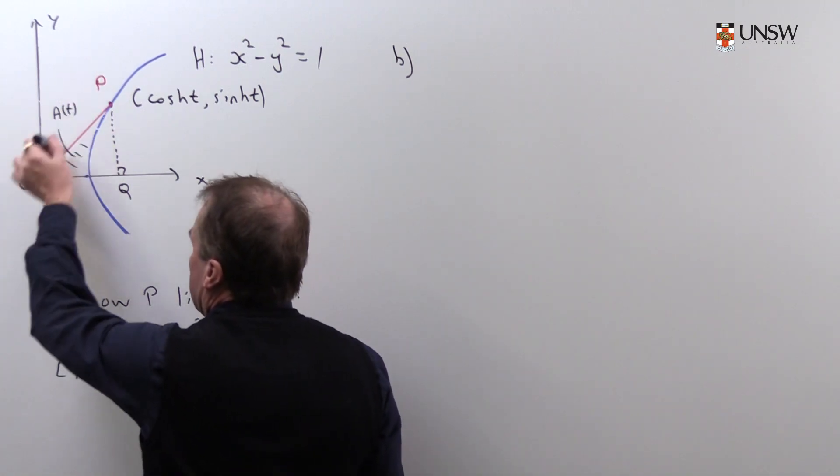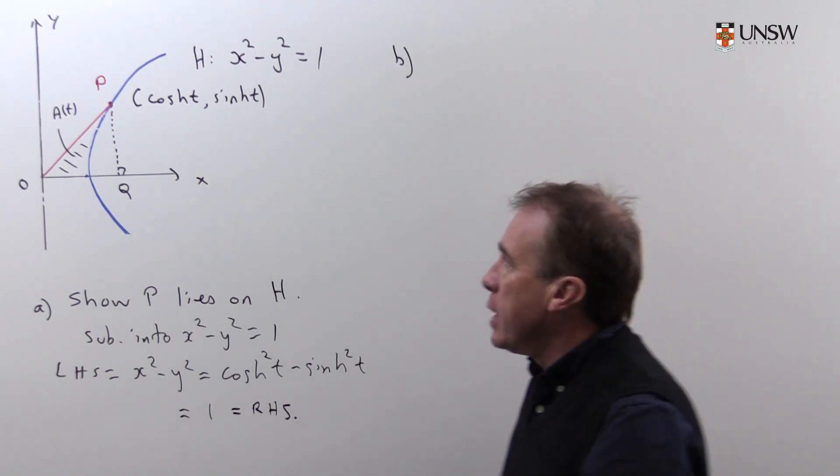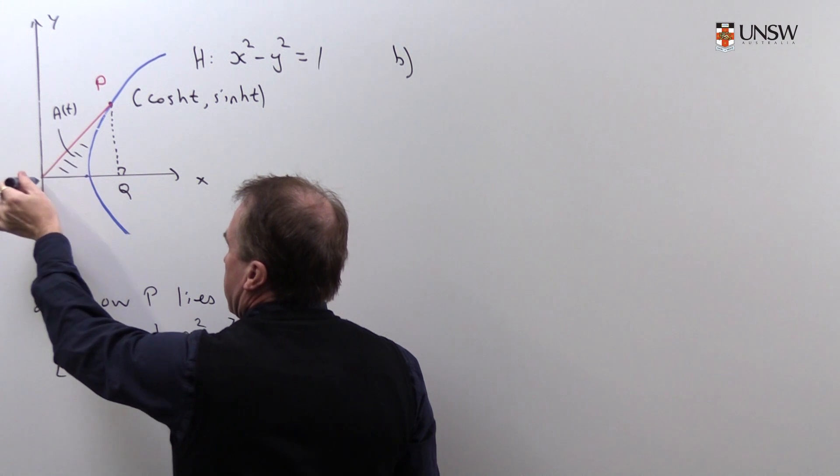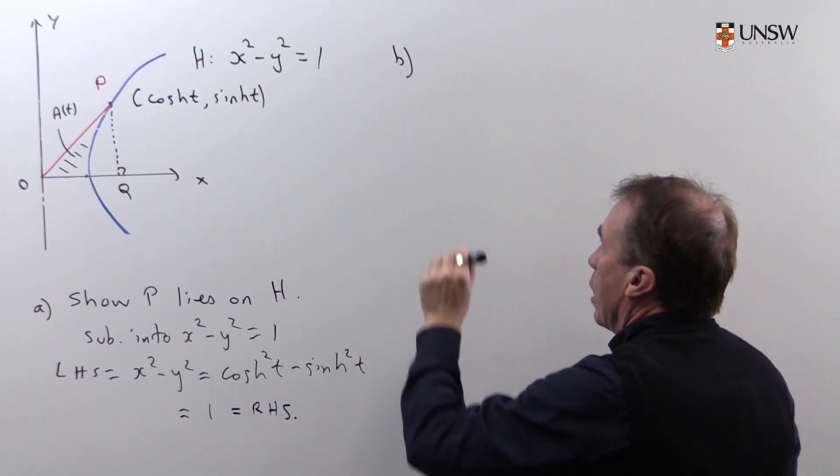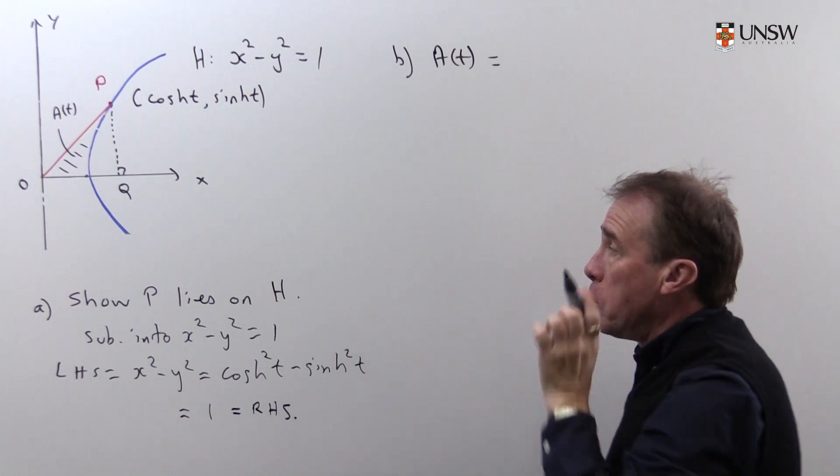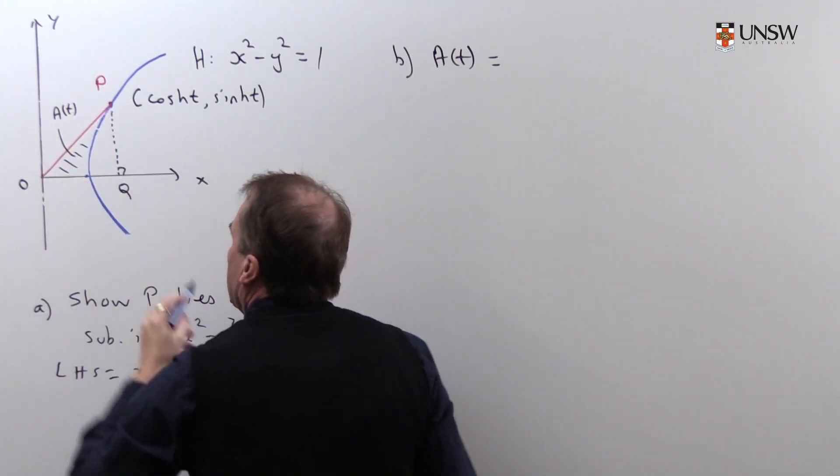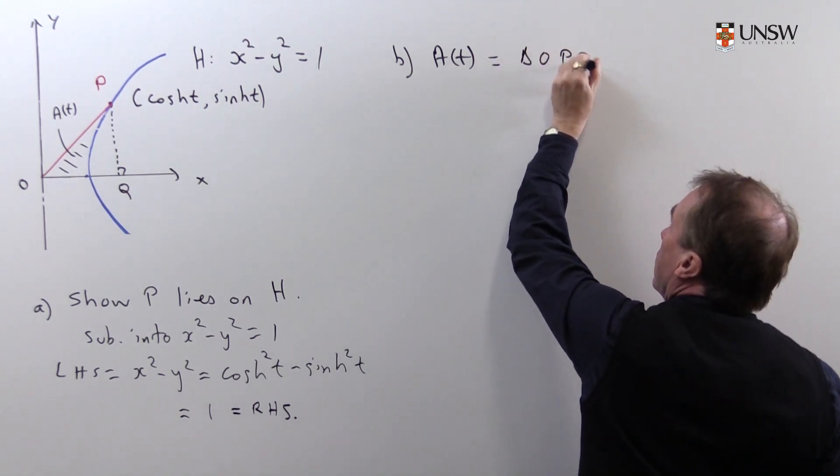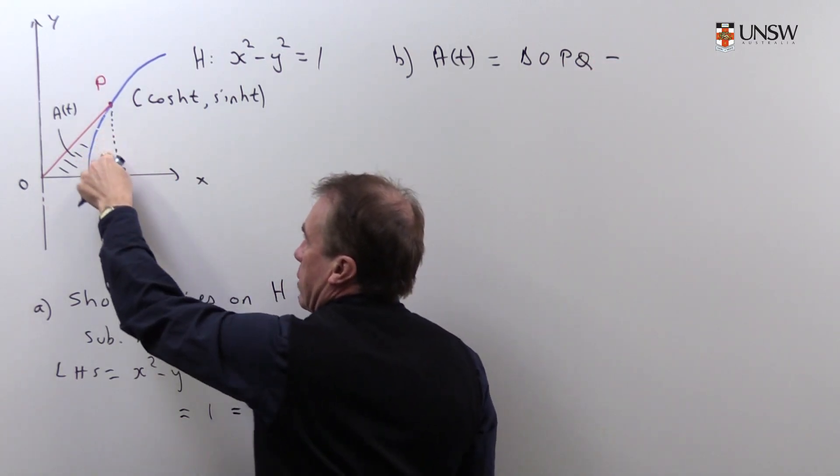Now the next part of the problem is we're going to look at this little area here, and we're calling that area A of t. So that's the area made by the curve, the x-axis, and the line joining O to P together. So we're going to write down what this area is. So the A of t is going to be equal to, well, it's not hard to see in the picture, it's going to be a triangle, so it's going to be the area of the triangle OPQ minus the area under the curve. That's this little area in here.